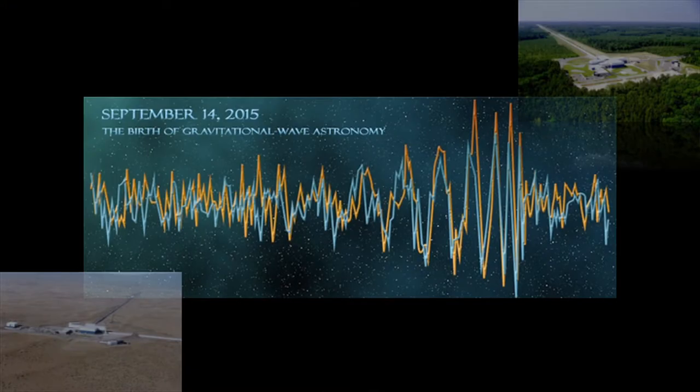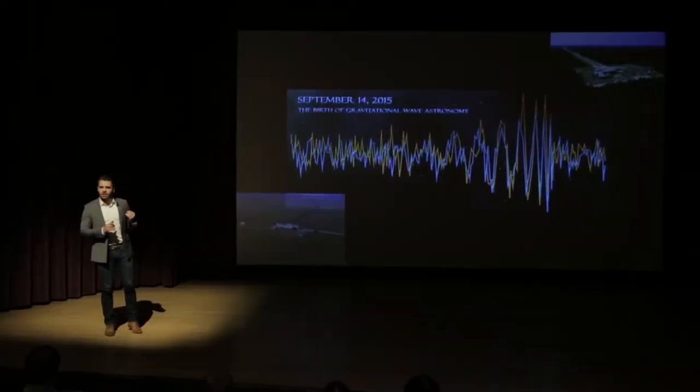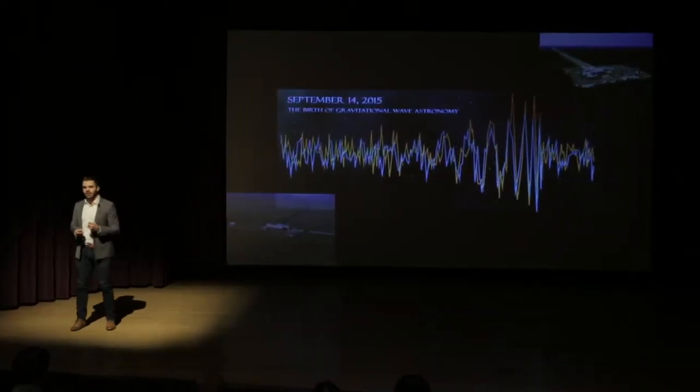But just last year, we actually made the first observation of these gravitational waves. Our rulers, situated in Livingston, Louisiana, and Hanford, Washington, each two-and-a-half miles long, were able to sense this tiny, tiny change in distance that came from colliding black holes a billion light-years away.